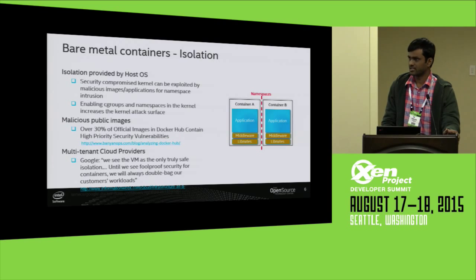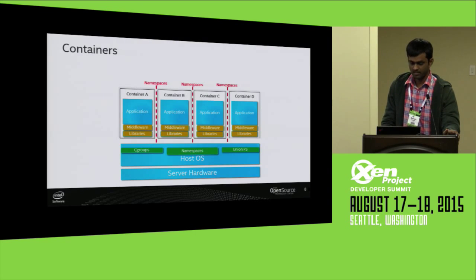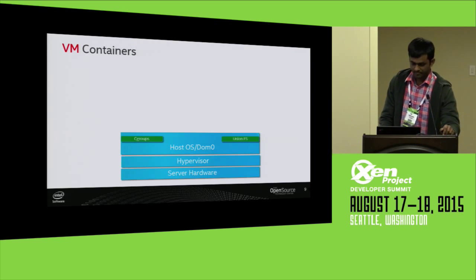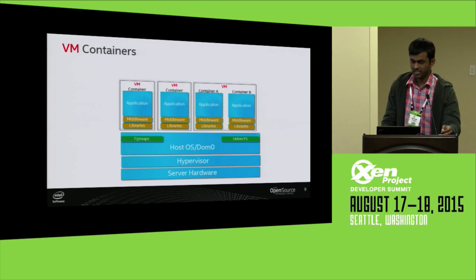It looks like we need a better solution for isolation — and that would be using VMs. But how can we run containers in VMs? With VM containers, we don't need namespaces because the VM guest itself provides isolation between containers. Each container runs in its own VM. We can also group multiple applications or containers within a single VM — for example, in a multi-tenant cloud, a single tenant could choose to run all their containers in one VM since they trust their own code, using fewer resources.